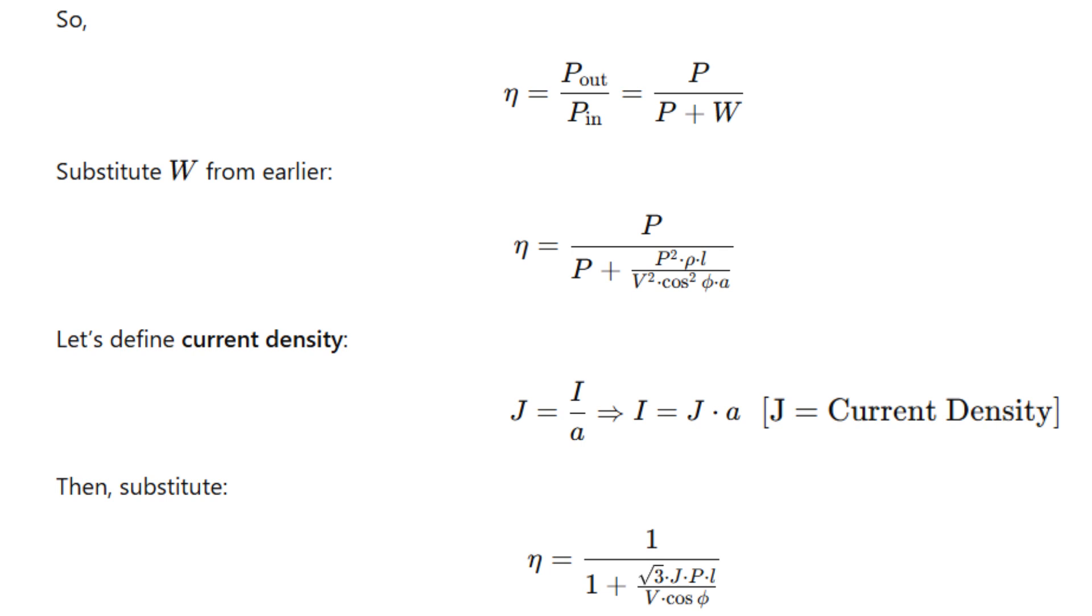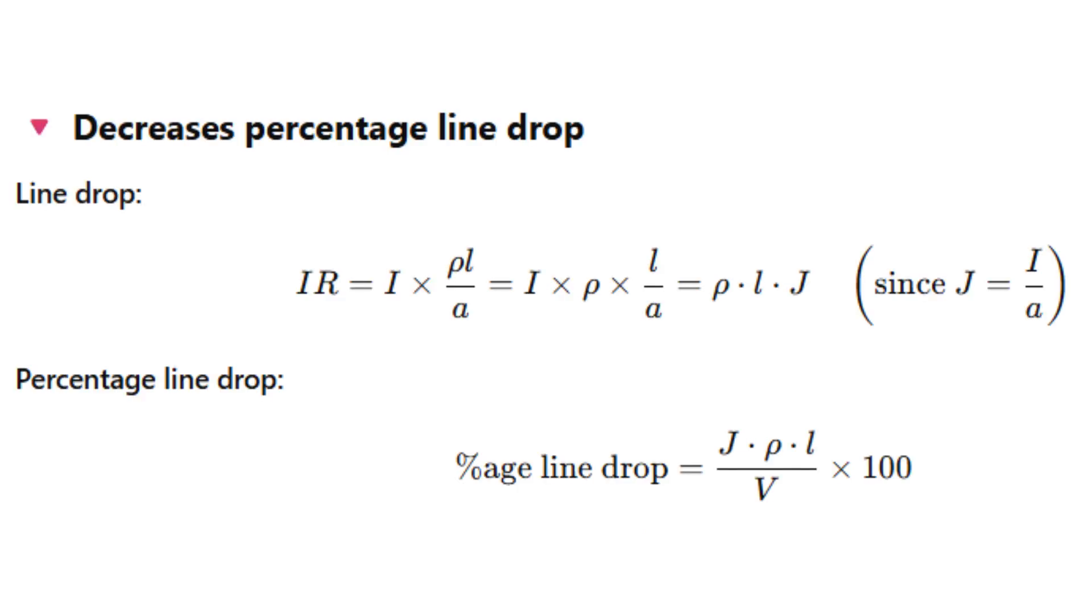Thirdly, high voltage reduces percentage line drop. Line drop is I into R, which is rho into L divided by A. If we substitute current density, we get percentage drop equals JPL divided by V into 100. This also shows that the line drop decreases as voltage increases, which improves the voltage regulation of the system.